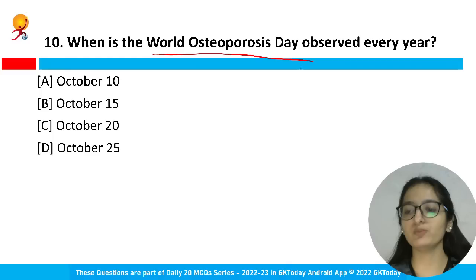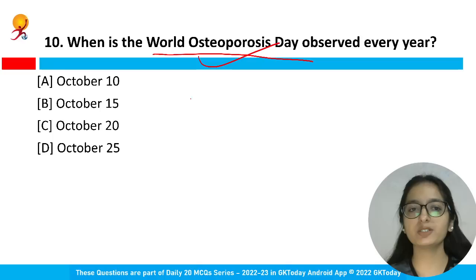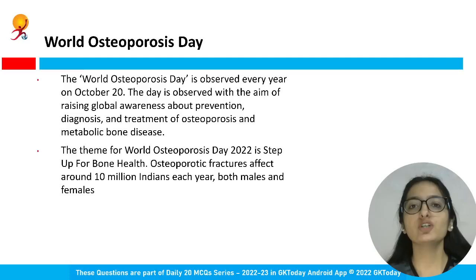The last main question asks when World Osteoporosis Day is observed every year. The answer is October 20th — option C is correct. Osteoporosis relates to the weakening of bones; with increasing age, bones get weak and fractures occur.